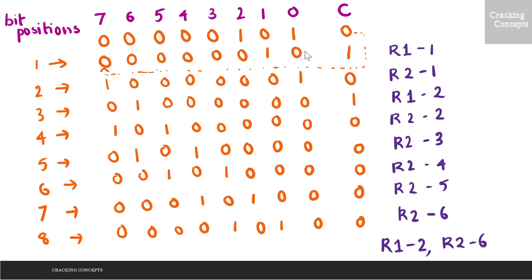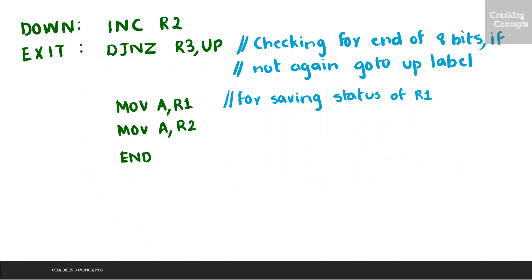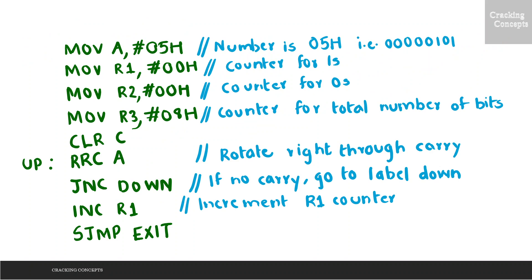For the second rotation, the next bit is copied to the carry flag and the value of carry is copied to the MSB of the accumulator. Now the carry bit value is 0, so we increment R2. The current value of R2 is 1. We then decrement R3, making R3 equal to 6. Since 6 is not 0, we go for the third rotation.